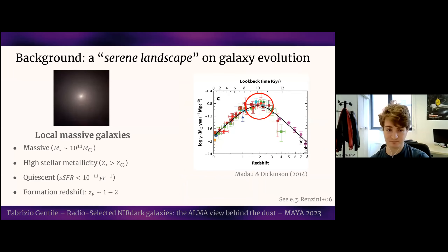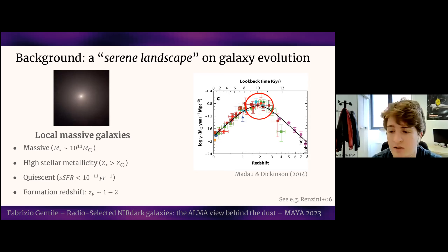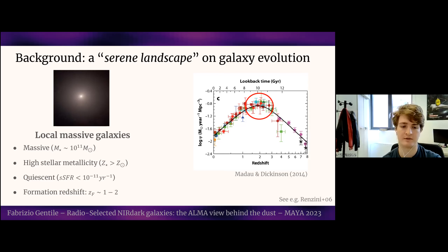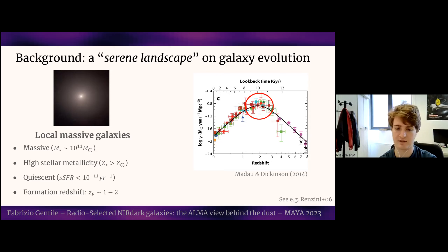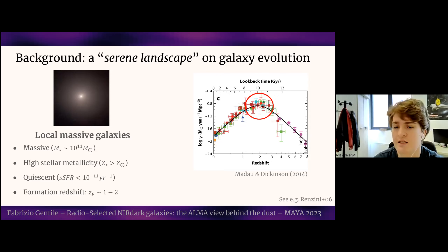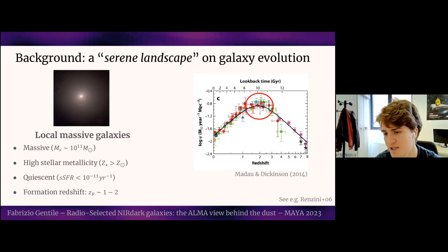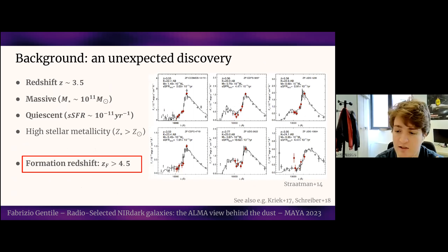I'll start with a brief introduction. This is what I call the serene landscape that we had on galaxy evolution until about 10 years ago. We were observing a population of massive galaxies in the local universe with a huge mass above 10^11 solar masses, and they were quiescent. Studies of spectroscopy and stellar archaeology pointed toward a formation redshift around 1 to 2, in agreement with the so-called star formation rate density — the average quantity of stellar mass created per year per cubic megaparsec. At this formation redshift, the universe was experiencing its peak in the star formation rate density, the so-called cosmic noon.